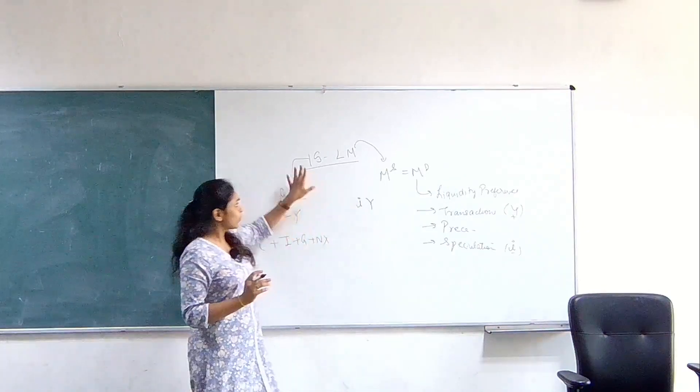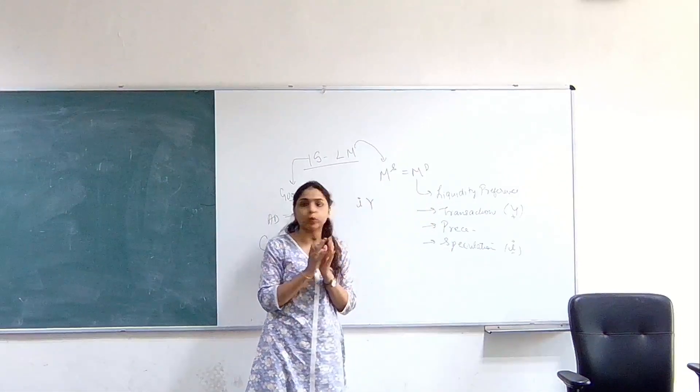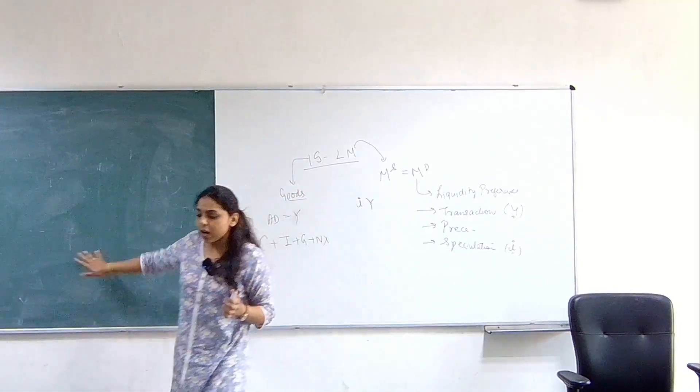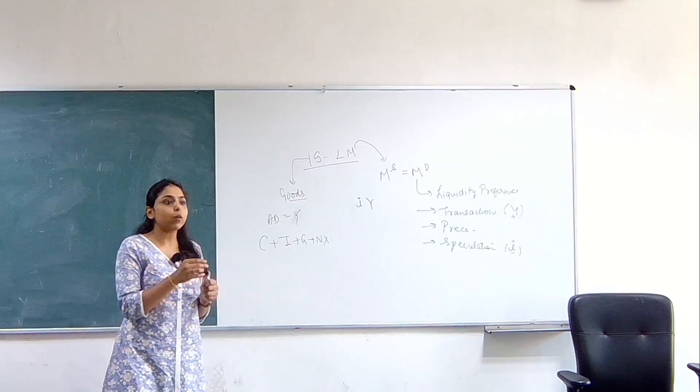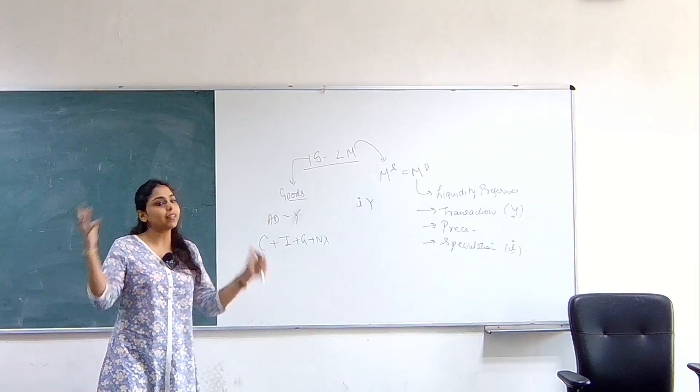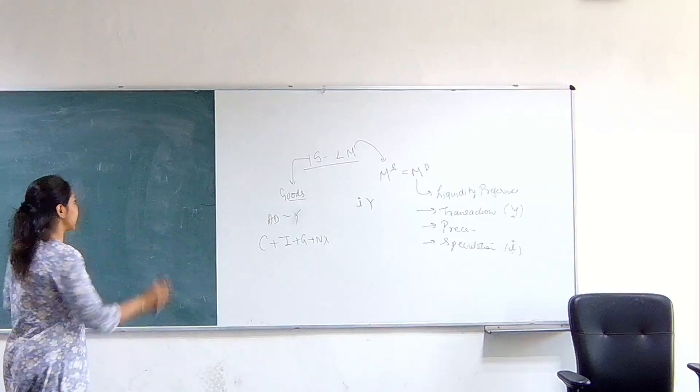So what we will do is, first we will look at IS and LM separately and then we will bring it together. So let me derive IS curve here and I derive LM curve here so that you can see both the things together and then we will bring them on one graph. So this is precisely what we will do.